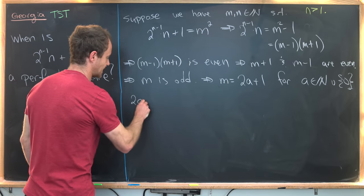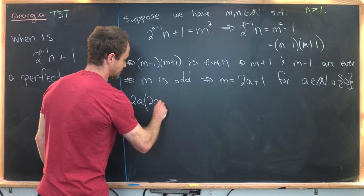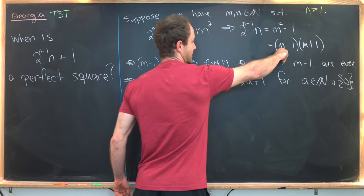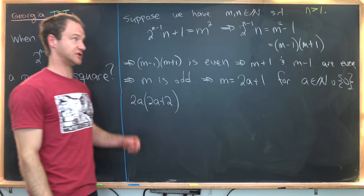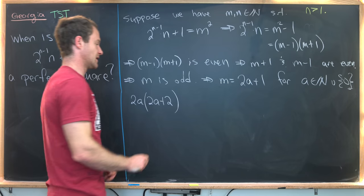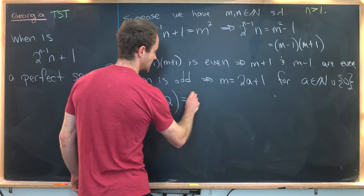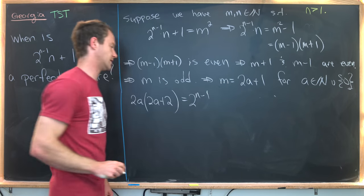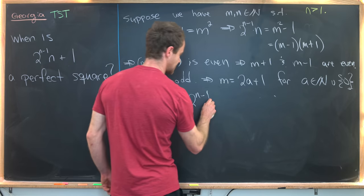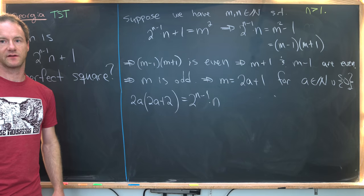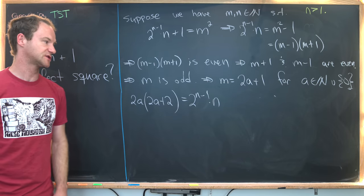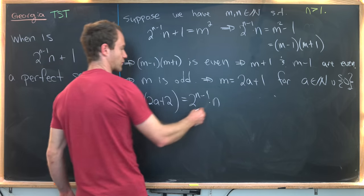So doing that, we'll have 2a × (2a + 2). So that would be from this. And from this, notice the 1 cancels here and the 1 doubles up to a 2 in this second bit. That is equal to 2^(n-1) × n. Now there's a factor of 4 we can factor out of the left-hand side. That means we can also factor a factor of 4 out of the right-hand side.